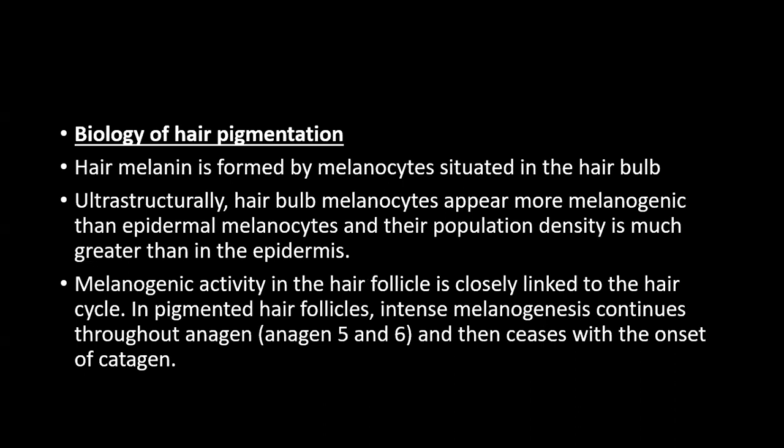The biology of hair pigmentation: hair melanin is formed by melanocytes situated in the hair bulb. Ultrastructurally, the hair bulb melanocytes appear more melanogenic than epidermal melanocytes, and their population density is much greater than in the epidermis. So the melanocytes in the hair bulb are not only greater in number but also more active in function, producing more melanin compared to similar melanocytes in the basal layer of the epidermis.